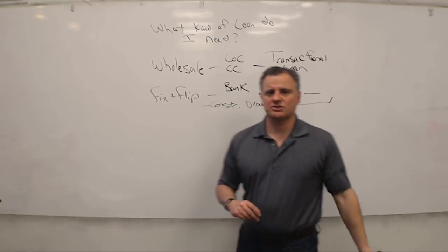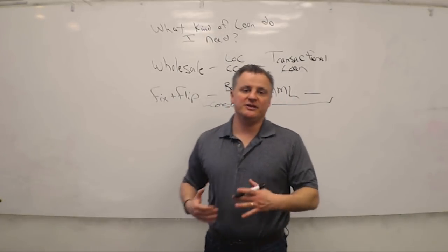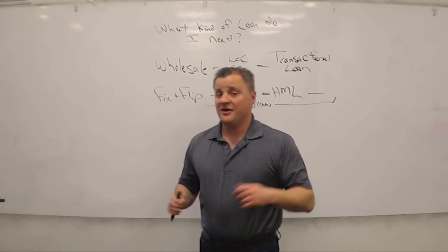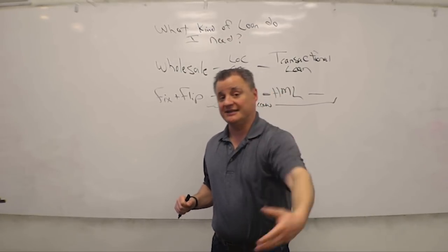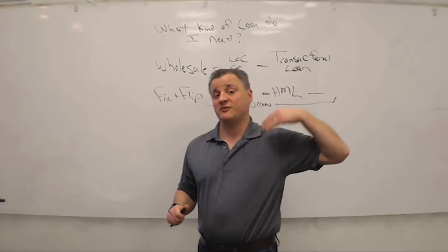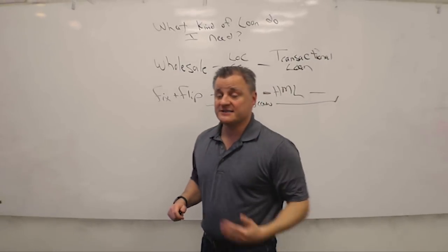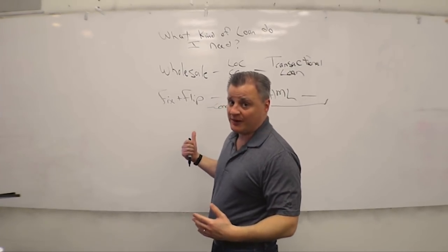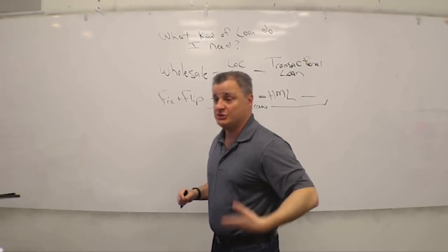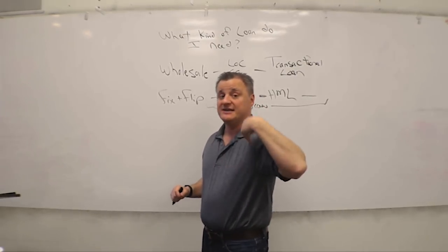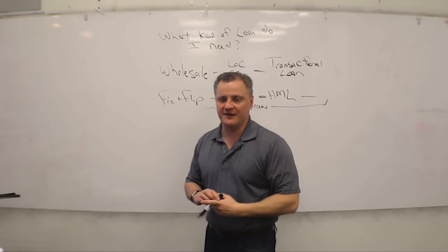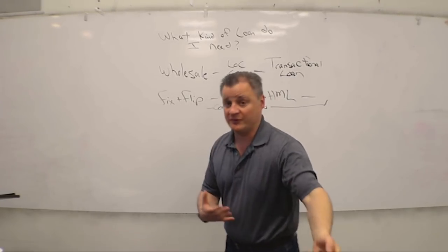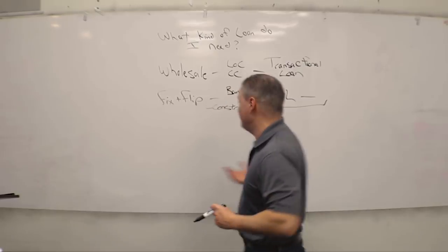Banks, hard money lenders, and private lenders will all require something called a construction draw. The way construction draws work is if you need $100,000 in renovation, they're not going to give you that all up front. They're going to give you a small chunk as you need it. Typically, they're not going to give it to you until you've already done that phase of the work. So you renovate, then you get some money, then renovate, then you get some money. So they can make sure you don't get ahead of them.